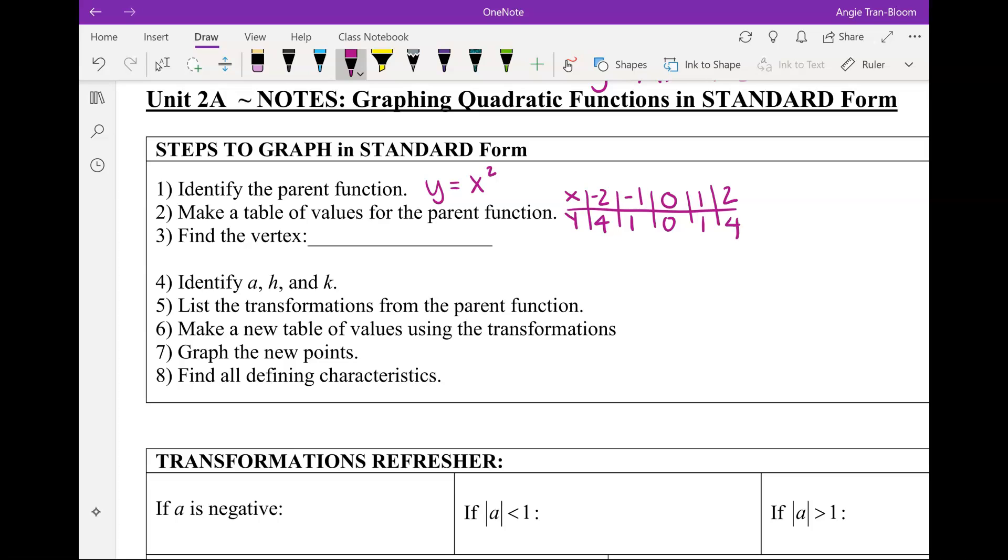Now, because this is not in HK form, you do not know the vertex right away. You have to find it. To find the vertex, the vertex is h, k. You have to find it algebraically. The x-coordinate of the vertex - would you agree the x-coordinate of the vertex is, in this case, h? In Algebra 1, anybody remember how to find the x-coordinate of the vertex? We actually use x equals negative b all over 2a.